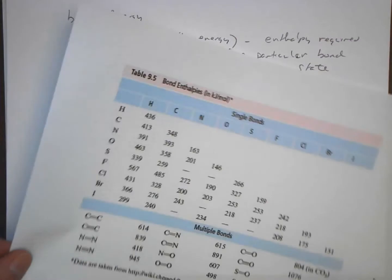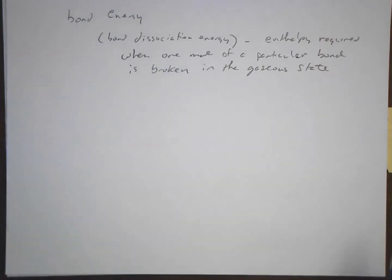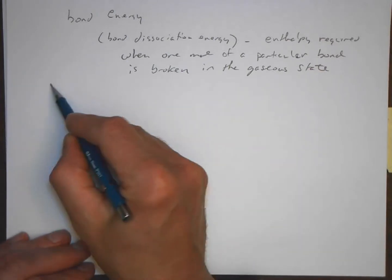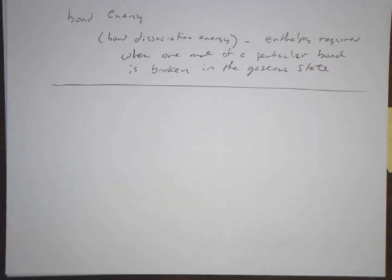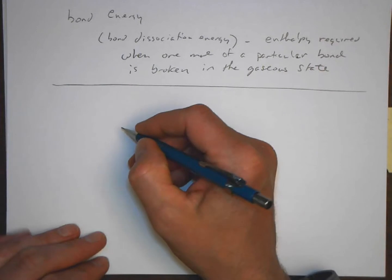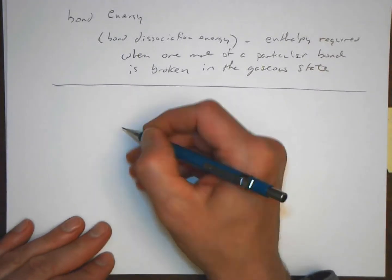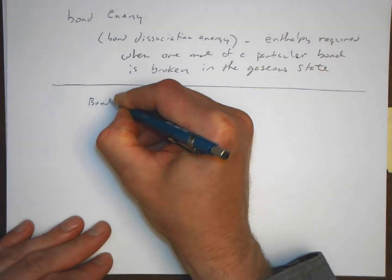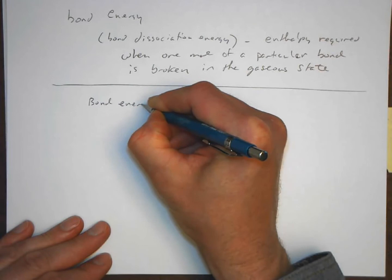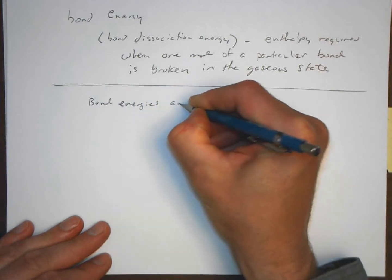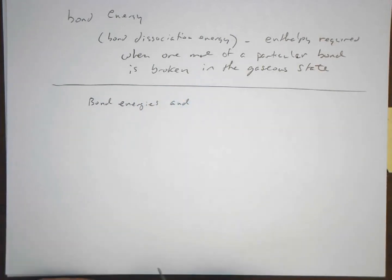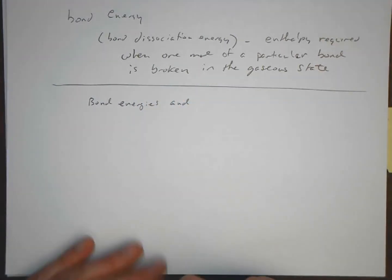So what we talked about a moment ago makes sense. So energy is required, this is the energy required to break the bond. And what we can do with this is the following: we can estimate enthalpies of reaction. So we can take bond enthalpies and estimate enthalpies of reaction.